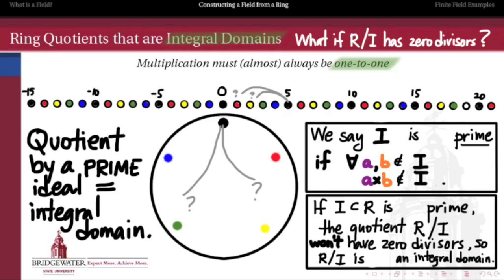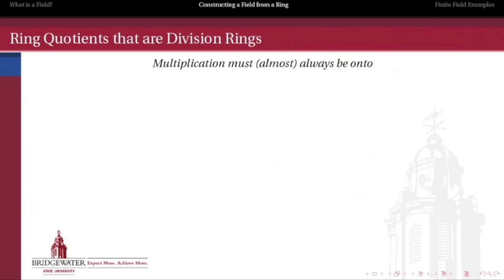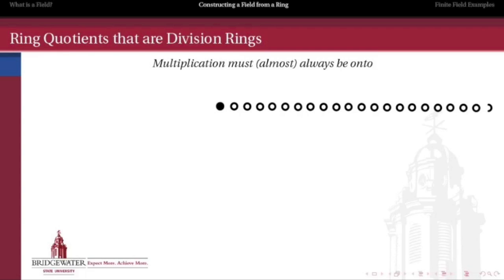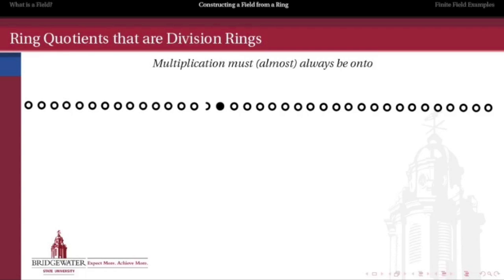The moral is that the quotient of any ring by one of its prime ideals will always be an integral domain — that's our first step along the way to constructing a field. As we know, every field is an integral domain, but not every integral domain is a field. So now let's take that next step: what does it mean to take the quotient of a ring and have that quotient be a division ring? In other words, we want every element of that quotient to be a multiplicative unit. We're going to be more interested in whether or not multiplication in the quotient is onto, rather than one-to-one.